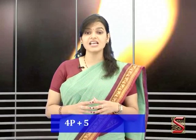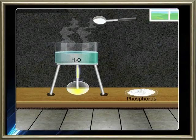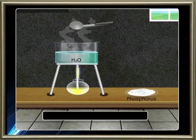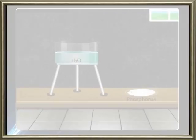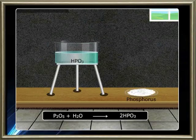Phosphorus pentoxide is prepared by phosphorus reacting with excess oxygen. The crude is then purified by sublimation. Phosphorus pentoxide reacts with hot water to produce phosphoric acid, and dissolves in cold water to produce metaphosphoric acid.